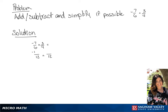So we have negative 14 over 12 plus 6 over 12. And we get an answer of negative 8 over 12, which we can then simplify to negative 2 over 3.